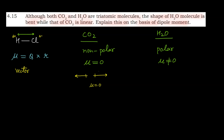अगर dipole moment की value 0 है, तो दो C=O bond dipoles एक दूसरे को cancel out कर रहे होंगे. CO2 की structure: carbon double bond oxygen on one side and double bond oxygen on the other side — यह molecule linear है. Dipole moments एक इस तरफ और दूसरी इस तरफ — दोनों एक दूसरे को cancel out कर देते हैं, और dipole moment की value 0 आ जाती है.